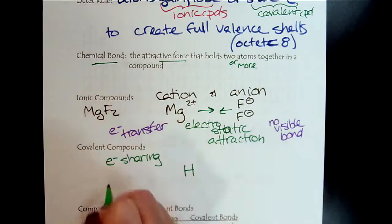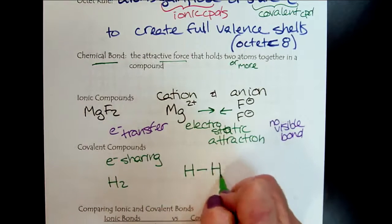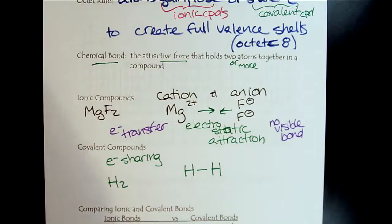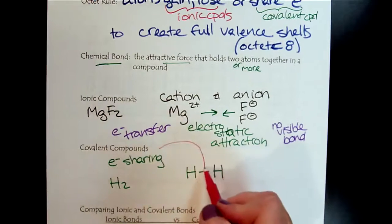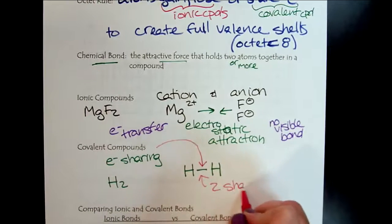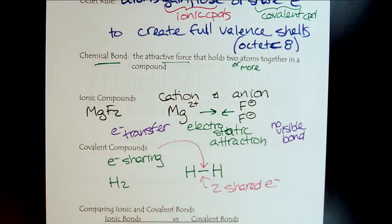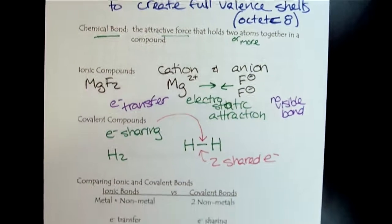There we go. So here are our two shared electrons. And so covalent compounds, like I mentioned, we'll get to later, but we're just kind of seeing how the rules come into play. And let's summarize now.